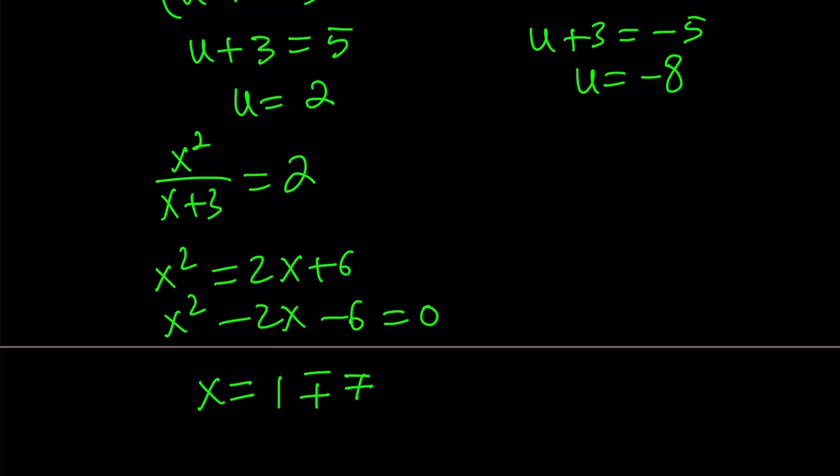we get x equals 1 plus minus root 7. We could also use the Porschen Lowe's method, which I made a video on, by the way. You can take a look.